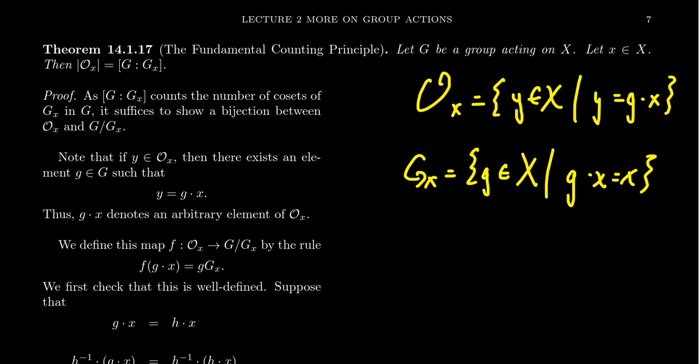To prove that these two things are equal, what I'm going to do, since the index G colon G_x counts the number of cosets of G_x inside of G, is provide a bijection between the set O_x and the set of left cosets of G_x. Because the index is the cardinality of this set. So if I can find a bijection between O_x and G mod G_x, then this bijection will prove that their cardinalities are equal, proving the fundamental counting principle.